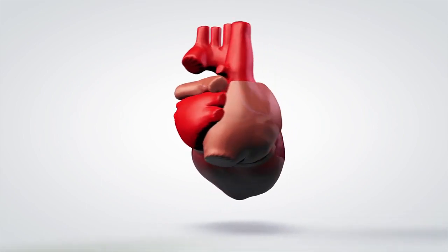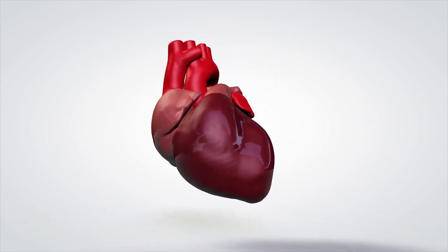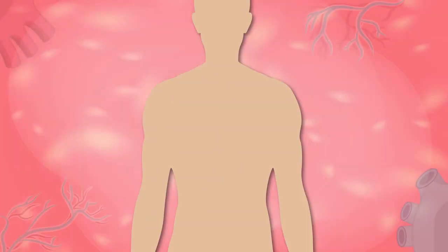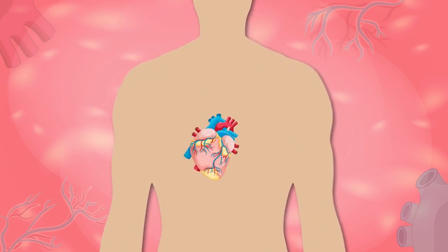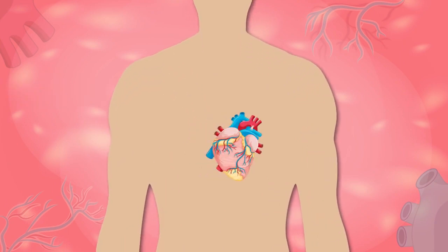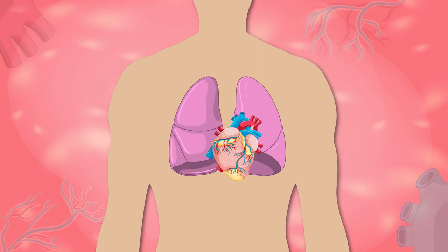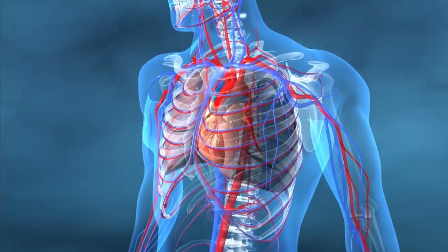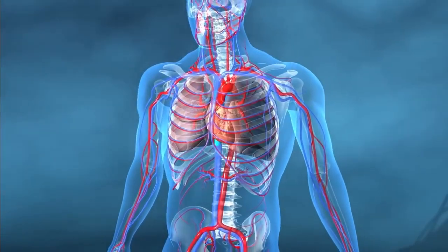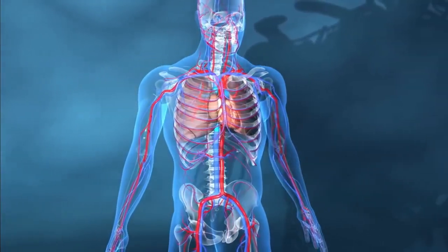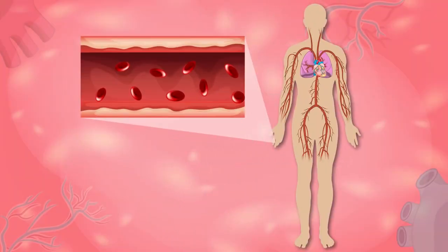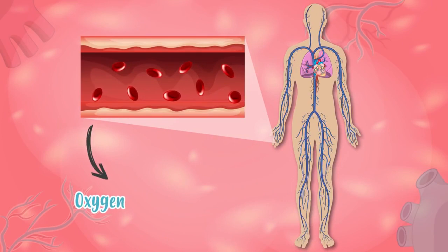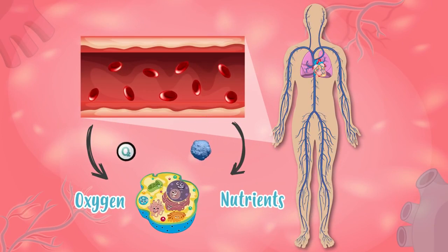The heart is the most special muscle we have. It's situated a little to the left from the center of our chest, between our lungs, and is in an oblique position — positioned diagonally. We say that it's very special because it sends blood all over our body, delivering oxygen and nutrients we need to live to all of our cells.